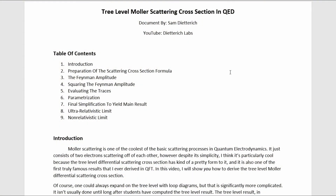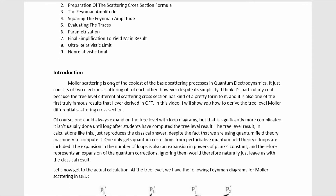Let's get going with the tree-level Møller differential scattering cross-section calculation in quantum electrodynamics. Møller scattering is one of the coolest basic scattering processes in QED — it consists of two electrons scattering off of each other. Despite its simplicity, the tree-level differential scattering cross-section has a pretty form to it, and it is also one of the first truly famous results that I ever derived in quantum field theory.